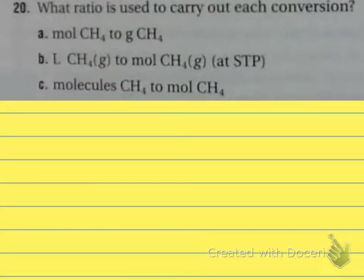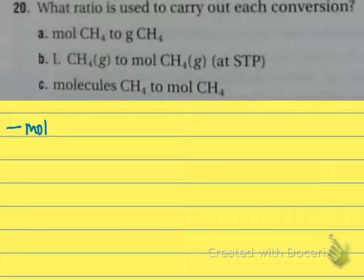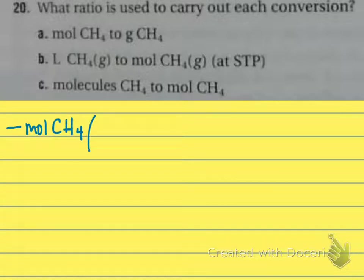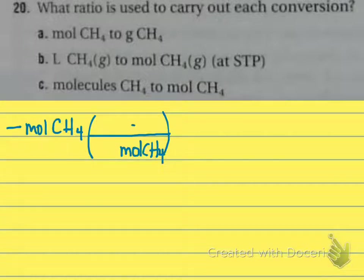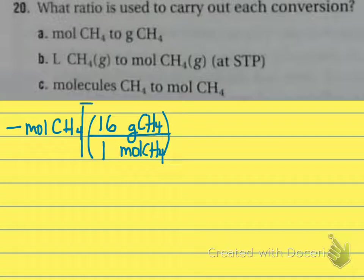Number 20: what ratio is used to carry out each conversion? Letter A: moles of methane to grams. We want to start with some number of moles of methane and convert it to grams. So moles of methane has to go on the bottom. We have a tool in our toolkit called molar mass that has moles and grams in it. One mole — using whole numbers, carbon's 12 and each hydrogen's 1, so that's 16. The book was asking for this written specifically with 16 grams of methane on top and one mole of methane on the bottom.